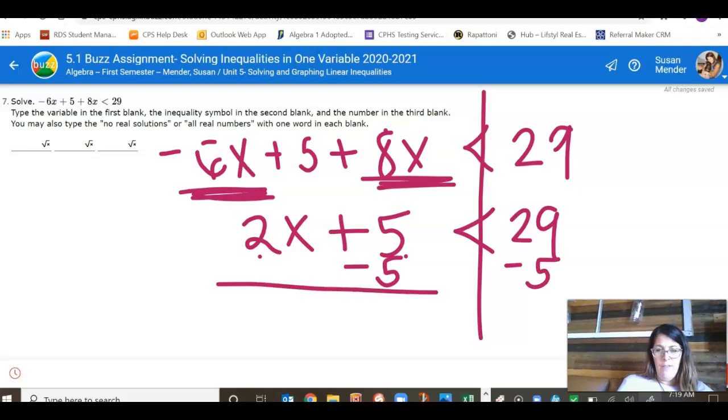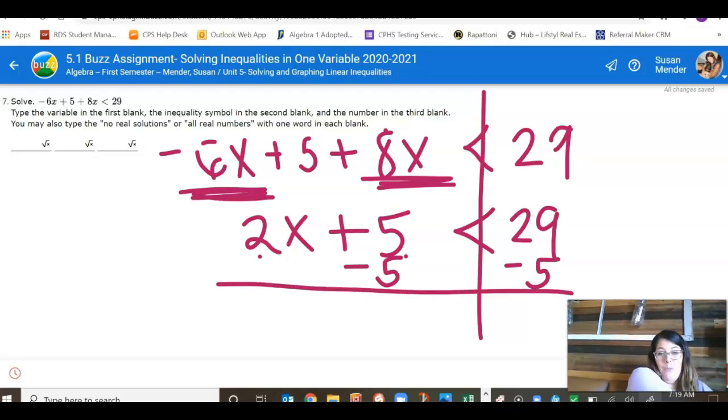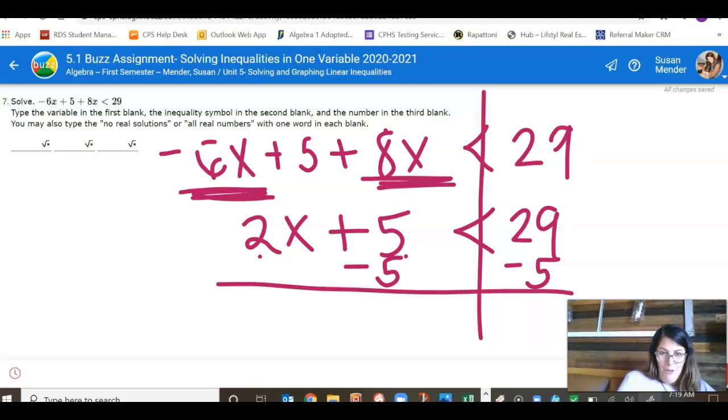adding and subtracting, if I'm doing them backwards, comes before multiplying and dividing. But sometimes it's easiest to just think about what's closest to the x. So now I have 2x is less than 24.